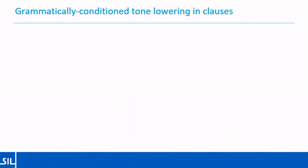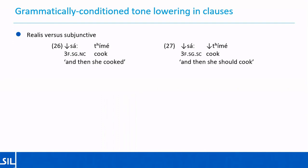The subjunctive set of conjunctions undergoes tone lowering in the same way as the narrative set. Examples twenty-six and twenty-seven give us the narrative conjunction and the subjunctive conjunction respectively — in this case they are the same segmentally, so 'and then she cooked' versus 'and then she should cook.' Both conjunctions undergo the tone lowering, but the behaviour of the verb differs. In twenty-six the verb occurs with its underlying tone pattern because it's in a clause with a narrative conjunction and there is no subject focus marker and no realis pronominal clitics — so it surfaces with its underlying tone pattern. In contrast, in twenty-seven the tone pattern of the verb is lowered because the conjunction is subjunctive rather than narrative.